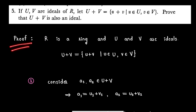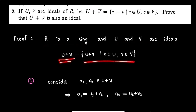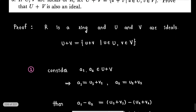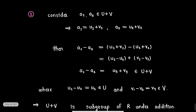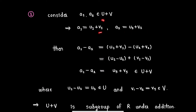Proof: Here R is a ring and U and V are ideals of ring R, and U plus V is the defined set. For number one, consider elements a₁ and a₂ from set U plus V. Therefore a₁ will be u₁ plus v₁, and a₂ will be u₂ plus v₂, where u₁ and u₂ are elements from ideal U and v₁ and v₂ are elements from ideal V.